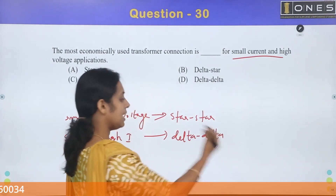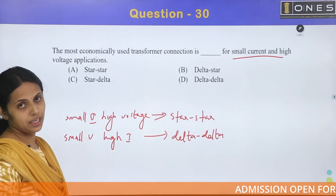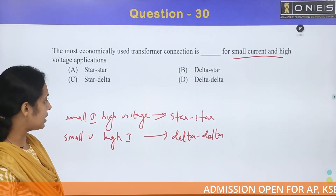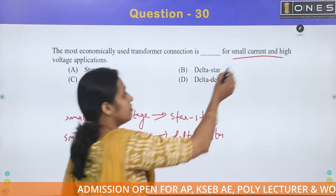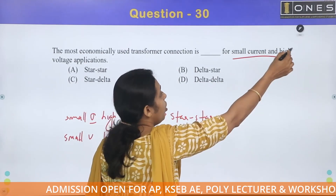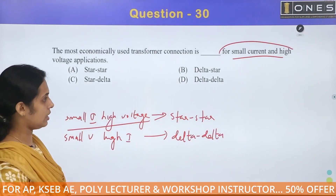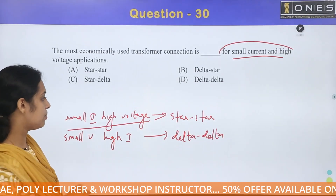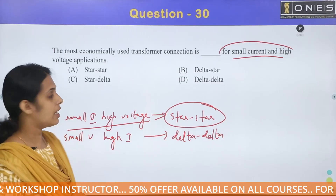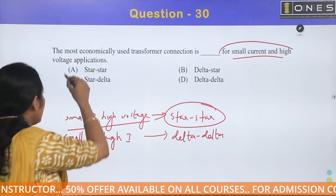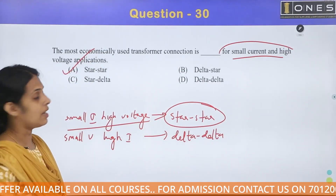Delta-delta connection means primary delta and secondary delta, which is used for small voltage and high current application — the reverse. For small current and high voltage application, we use the star connection. Option A is the correct answer: star connection.